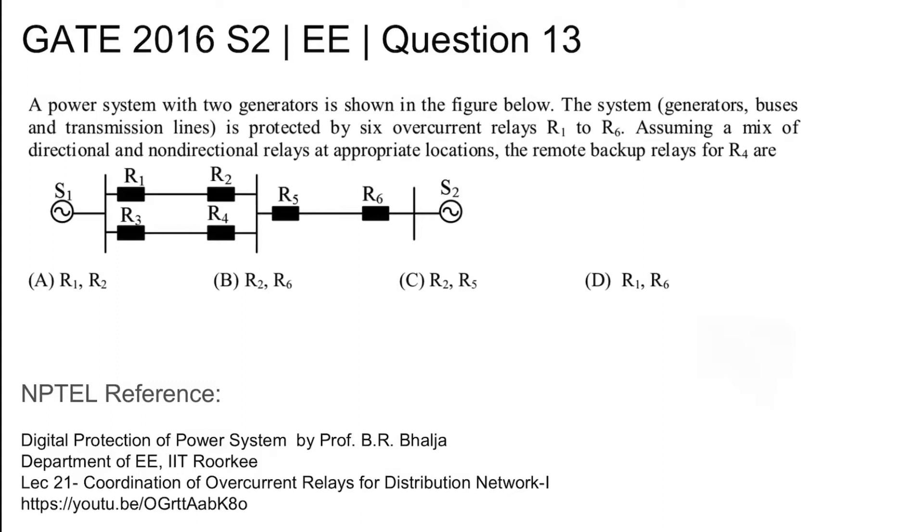This is GATE 2016 Set 2 Electrical question number 13. A power system with two generators is shown in the figure below. The system, that is generators, the buses, and the transmission line, is protected by six overcurrent relays R1 to R6. Assuming a mix of directional and non-directional relays at appropriate locations, the remote backup relay for R4 is being asked.